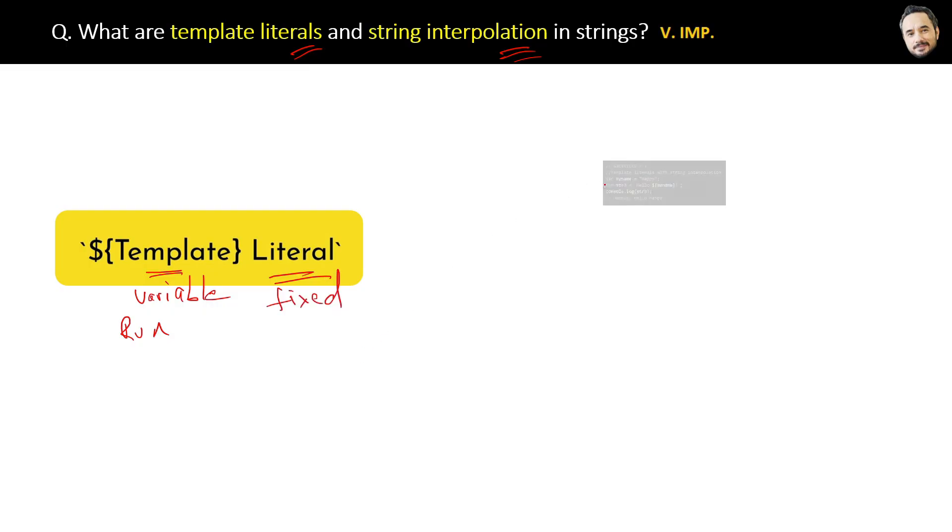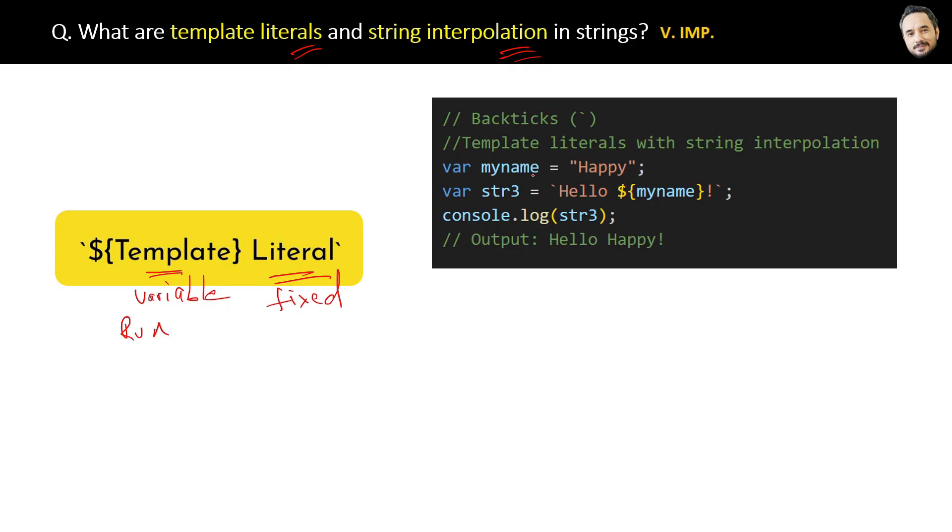Let's see the code now. Here is the code where first we have a normal string with the value happy, and then we are putting a statement inside the back ticks. This statement inside the back ticks is a template literal. Template literals use the string interpolation concept.